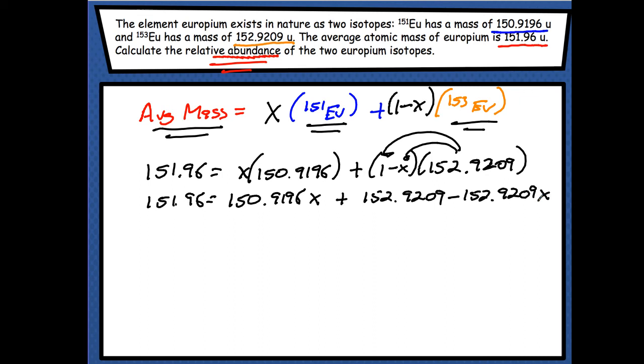OK, so now I'm going to combine like terms. So 151.96 equals, now I'm combining these two guys right here, the x's together. And we're actually going to get a negative number, negative 2.0013x after I add those two numbers together. Plus 152.9209.